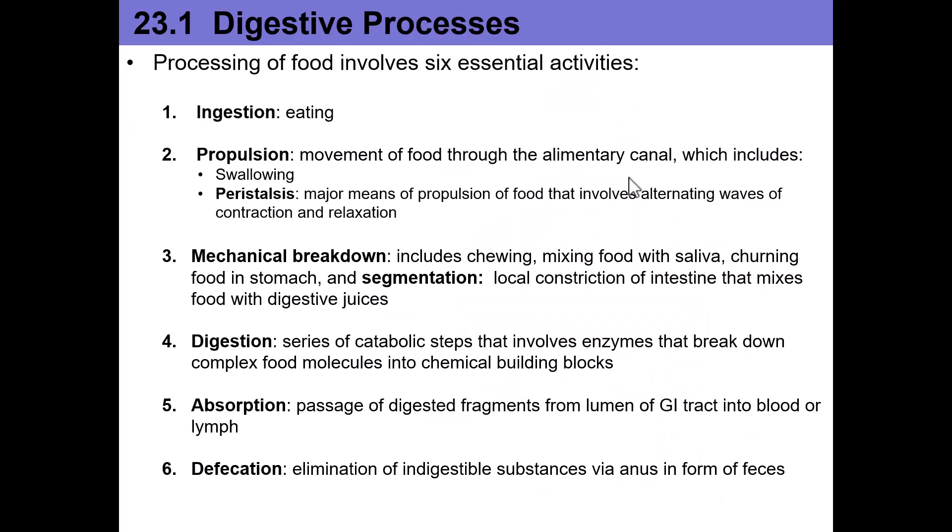As you are learning the different organs of the digestive system, particularly of the GI tract, I want you to think about which of these six digestive processes occur in each organ, because it will help you remember and understand some of the complexities of the organ. So what are these processes? Ingestion, which is eating. Propulsion, which is the movement of food progressively through the GI tract — that involves swallowing and something called peristalsis, moving that food forward through the organs.